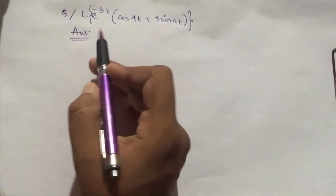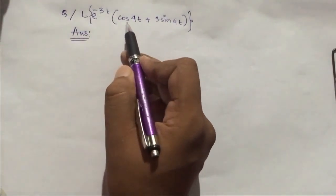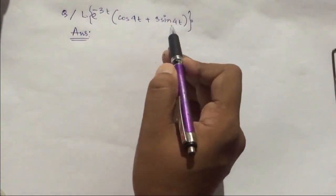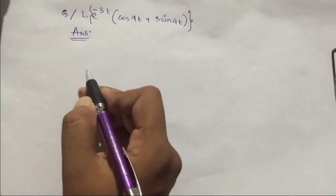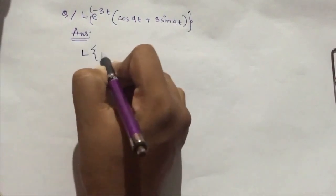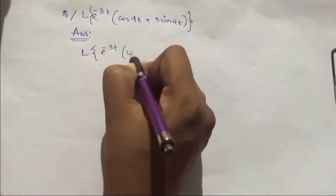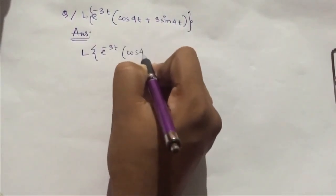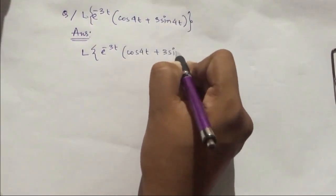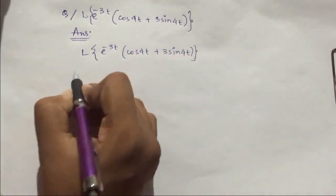This is the second question: find the Laplace transform of e^(-3t)·[cos(4t) + 3·sin(4t)]. We can separate the terms as the Laplace transform of e^(-3t)·cos(4t) plus 3 times the Laplace transform of e^(-3t)·sin(4t).